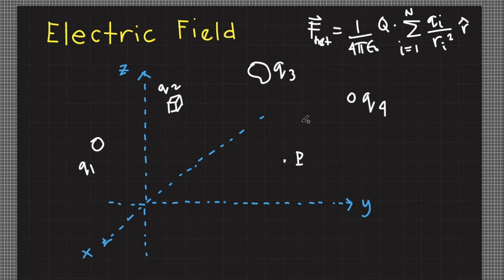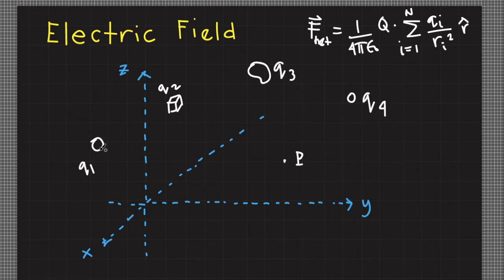We can rename such influence as a field. In physics, a field is a vector quantity that is a function of position, and such position is measured relative to the source of the field. We call this an electric field because it originates from electric charges. The electric field at point P is the vector sum of the individual influences of the source charges. Any charge creates an electric field in its vicinity, but because of Newton's third law, a charge is not affected by its own electric field — only the electric field generated by other charges can apply force on that specific charge.